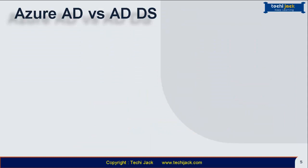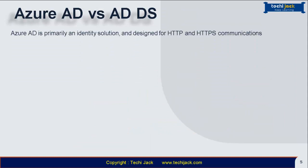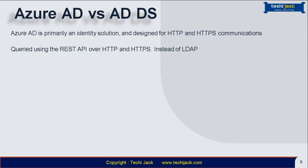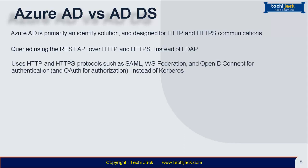Azure AD versus ADDS. First, identity solution: Azure AD is primarily an identity solution designed for HTTP and HTTPS communication. Second, REST API: it is queried using REST API over HTTP and HTTPS instead of LDAP, which is used in ADDS. Because Azure AD is HTTP and HTTPS based, it does not use Kerberos authentication; instead it uses protocols such as SAML, WS-Federation, and OpenID Connect for authentication, and OAuth for authorization.